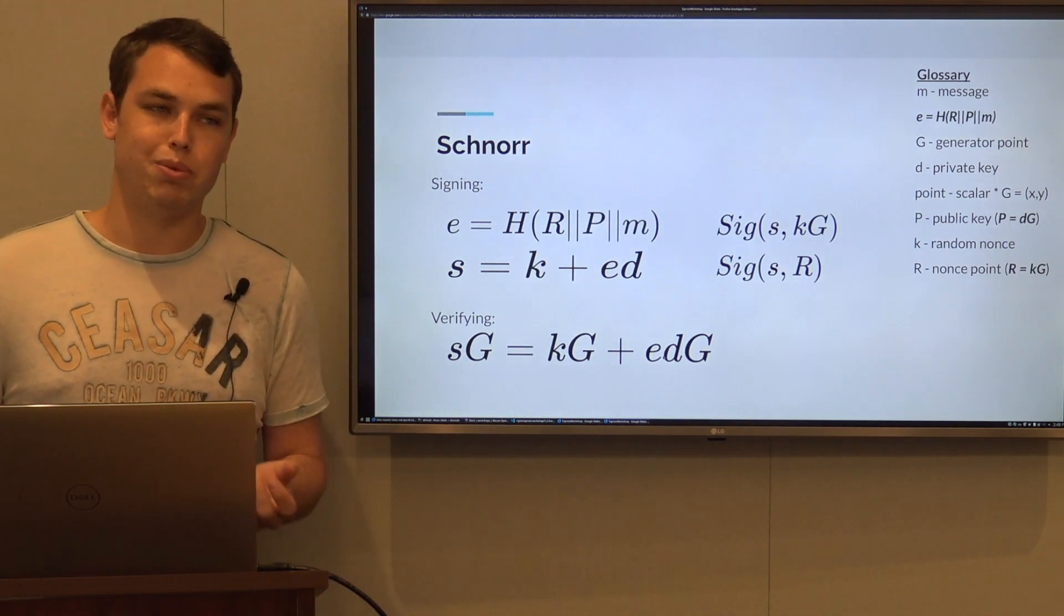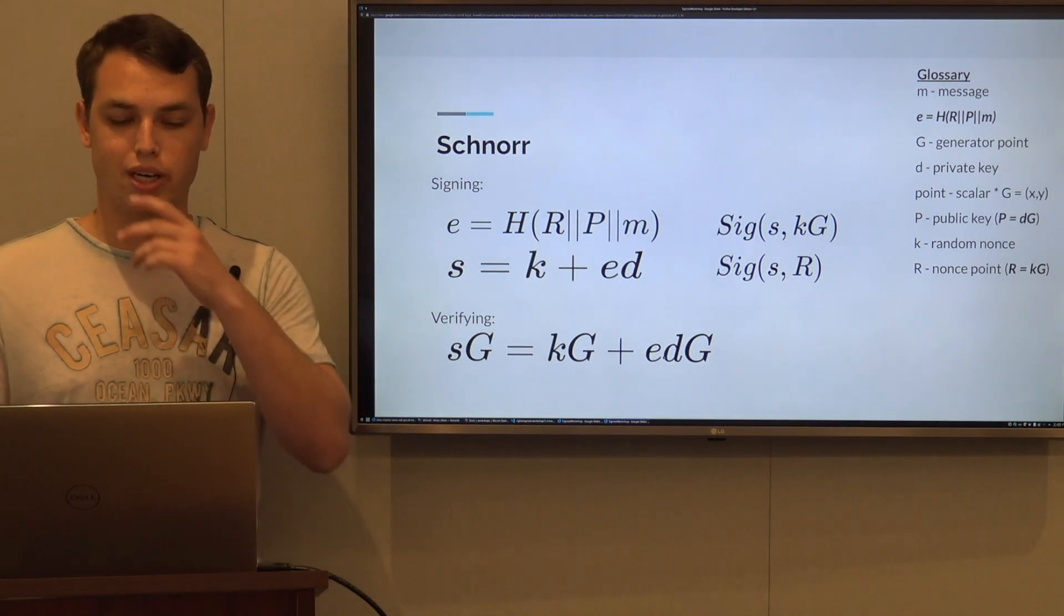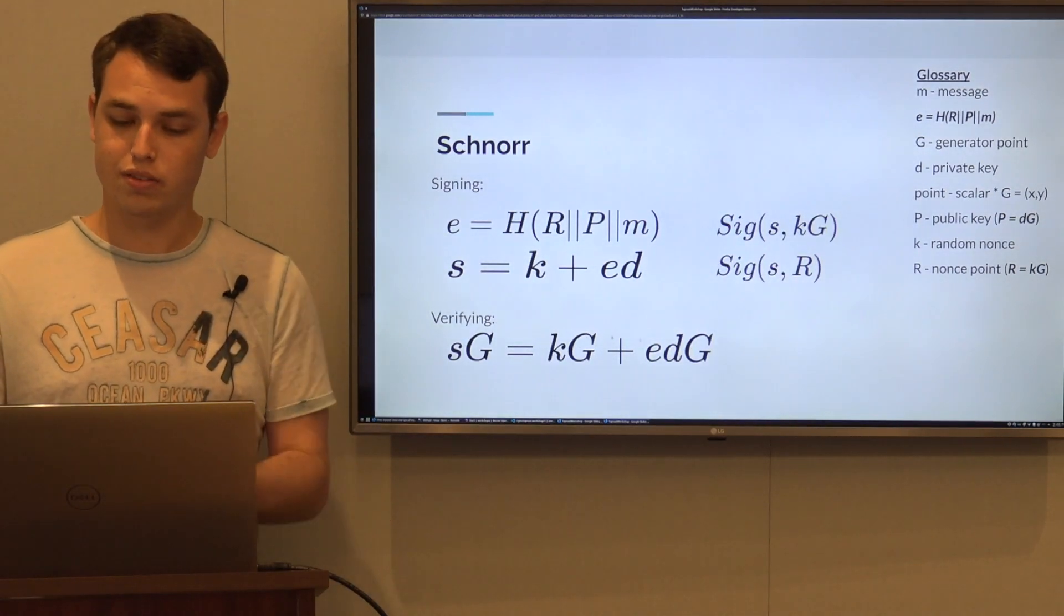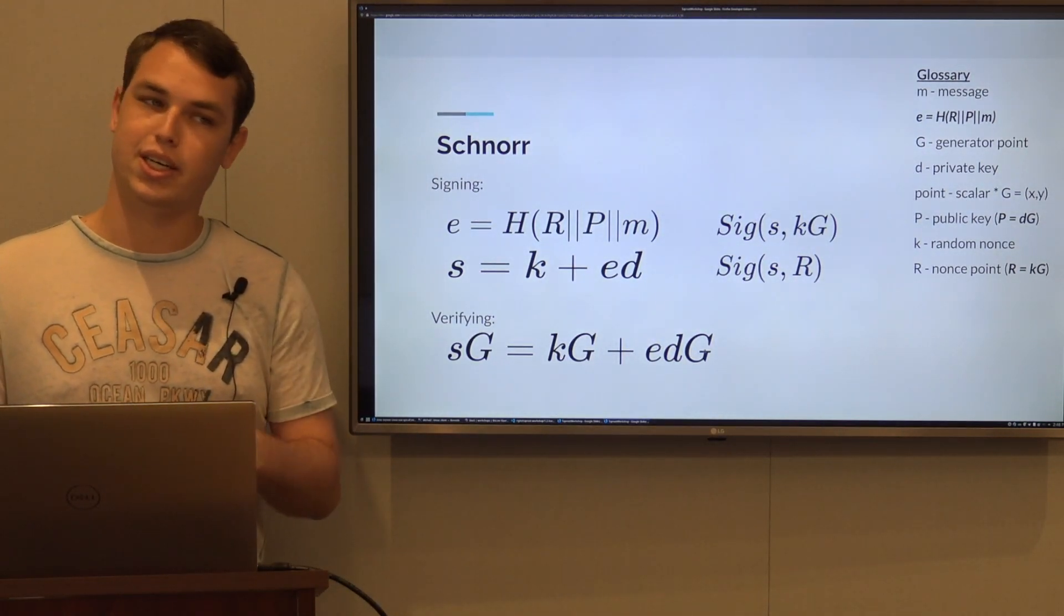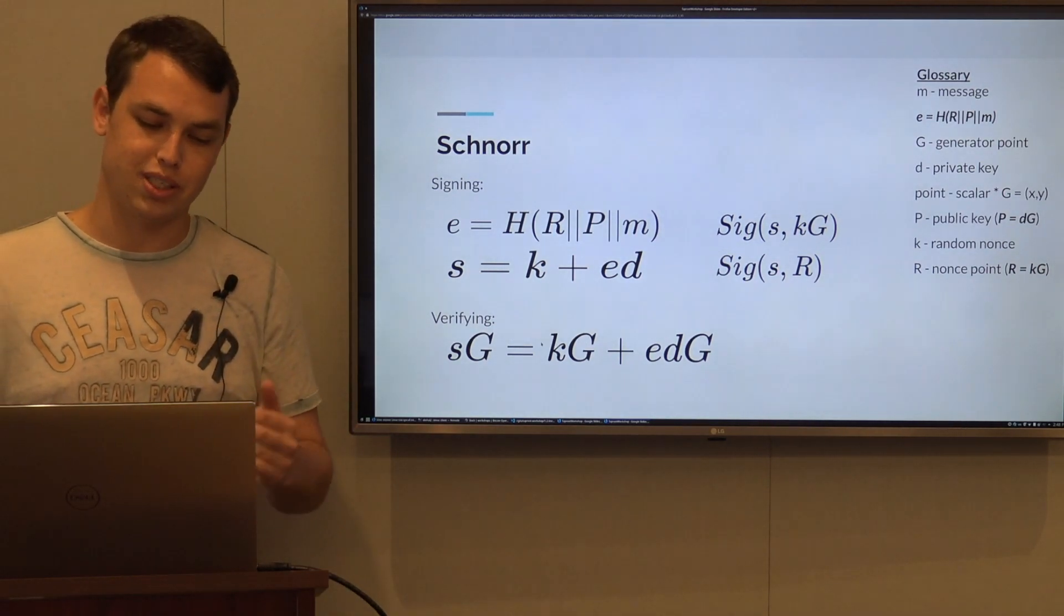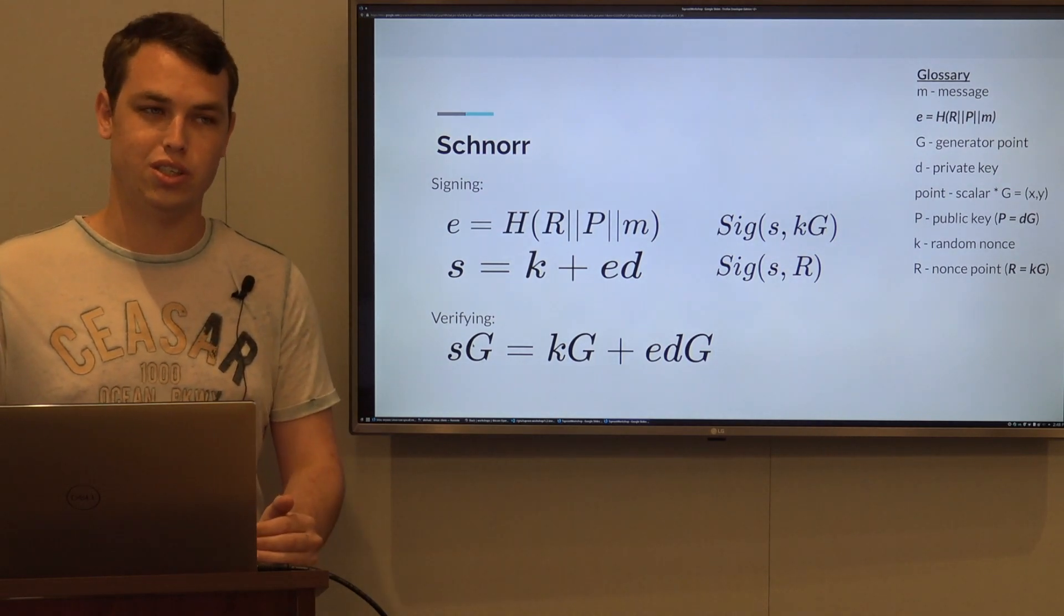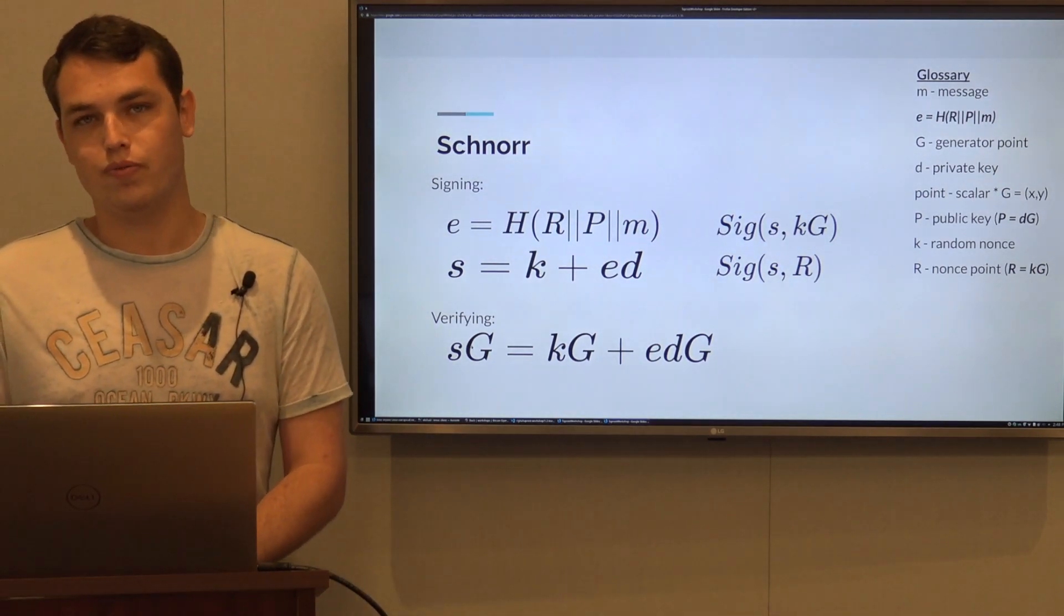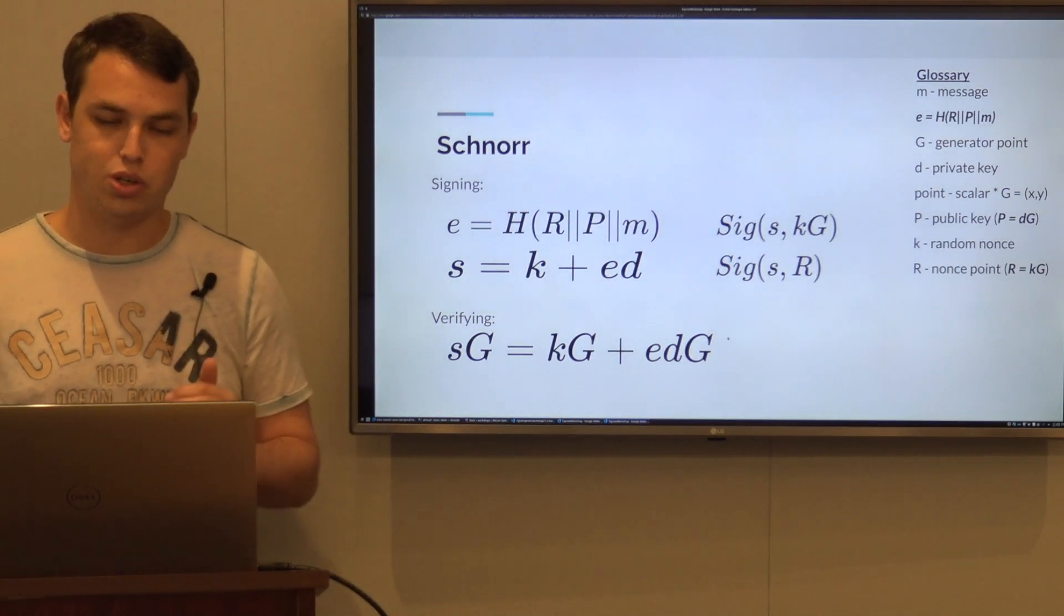We know E because that's publicly known - that's the message we were signing on. So by multiplying E by the public key and adding to it the R point, we need to make sure that it's the same as S, which is part of the signature, multiplied by G. If this equation holds, then the signature is correct and verified.